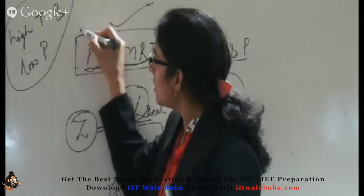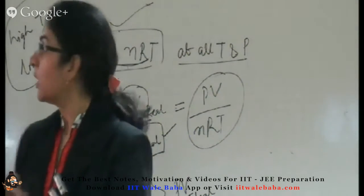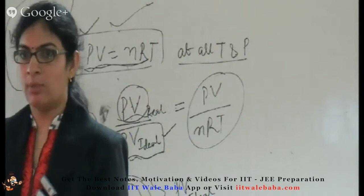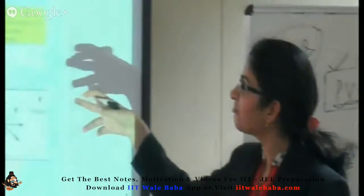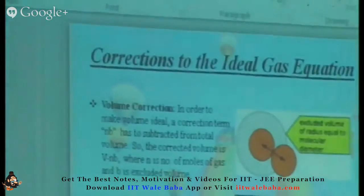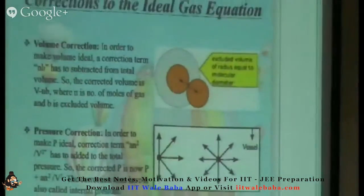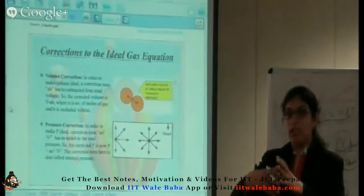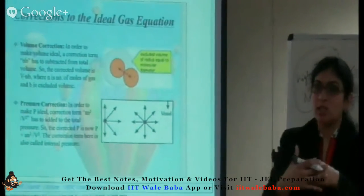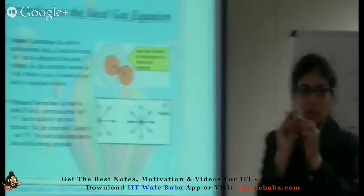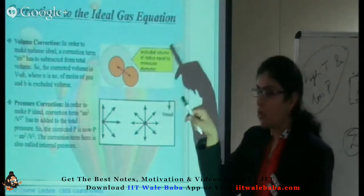Van der Waals studied this and two corrections were made to the ideal gas equation. We need to correct the volume term — the volume of an ideal gas is slightly overestimated, meaning it is slightly higher than the volume of a real gas. So we subtract a correction term: the real volume is V minus nb, where nb is the volume correction.